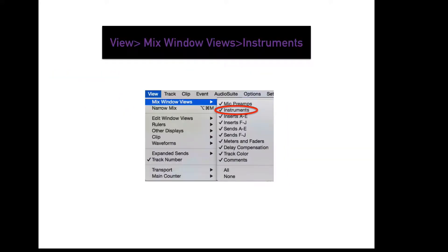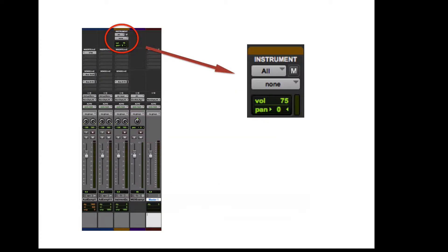To display your instrument controls in the mix window, go to View, Mix Window Views, Instruments. This row will show up in your mix window. You have access to the instrument I/O, Mute, Velocity, and Pan through this display.